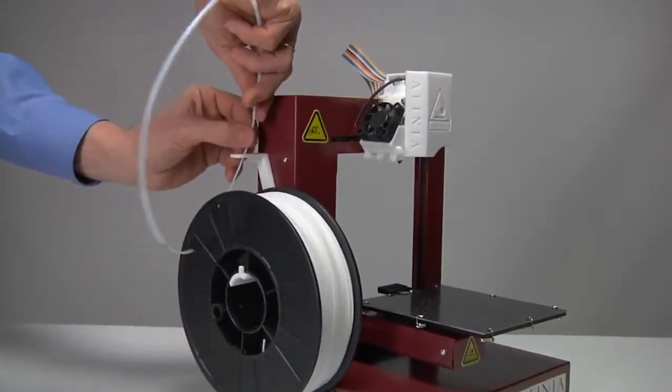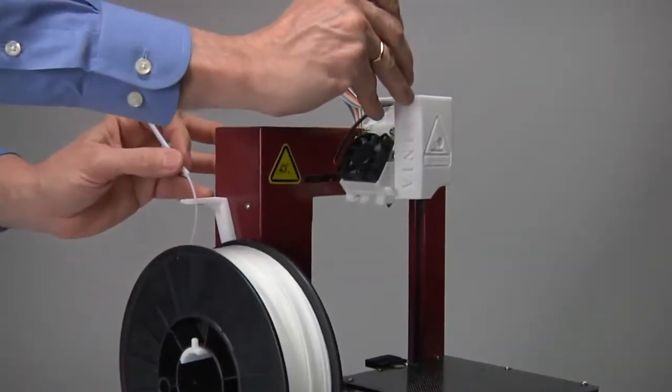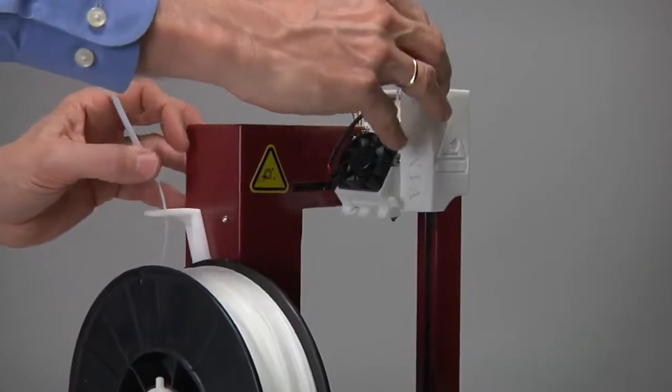Feed the filament through the tube until about four inches protrudes from the tube. Insert the first inch or so of the protruding filament into the top hole of the extruder head.